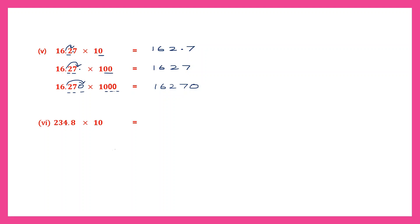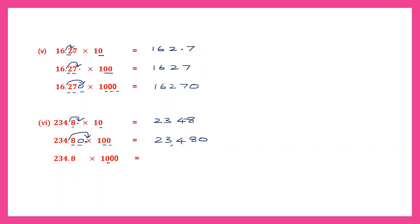Question 6: 234.8 into 10. Point moves one place to the right — giving 2,348. Multiply by 100: two zeros, point moves two places, we add a zero — giving 23,480. Multiply by 1000: three zeros, point moves three places, we add two more zeros — giving 234,800.